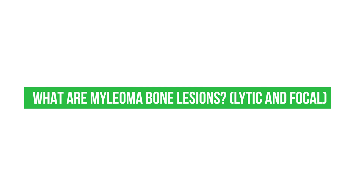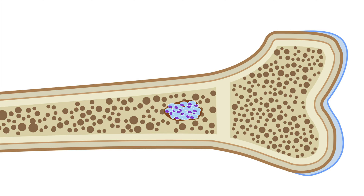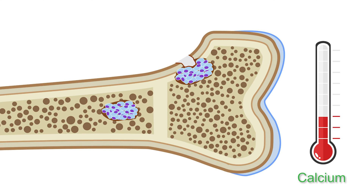What are myeloma bone lesions, lytic and focal? Myeloma cells live in the bone marrow, which is at the center of the bones. One of the primary complications we see from multiple myeloma is that the myeloma cells can actually stimulate other cells in the bones to eat away at the bones and form holes, weakening them, predisposing to fracture, causing bone pain, and releasing calcium out of the bones into the blood, which can raise the blood calcium level and make people feel worse.